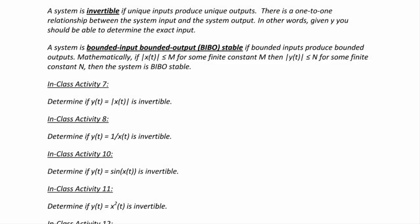A system is invertible if unique inputs produce unique outputs — there is a one-to-one relationship between input and output. Given Y, you should be able to determine the exact input X. A system is bounded input bounded output (BIBO) stable if bounded inputs produce bounded outputs. Mathematically, if |x(t)| ≤ M for some finite M, then |y(t)| ≤ N for some finite N.